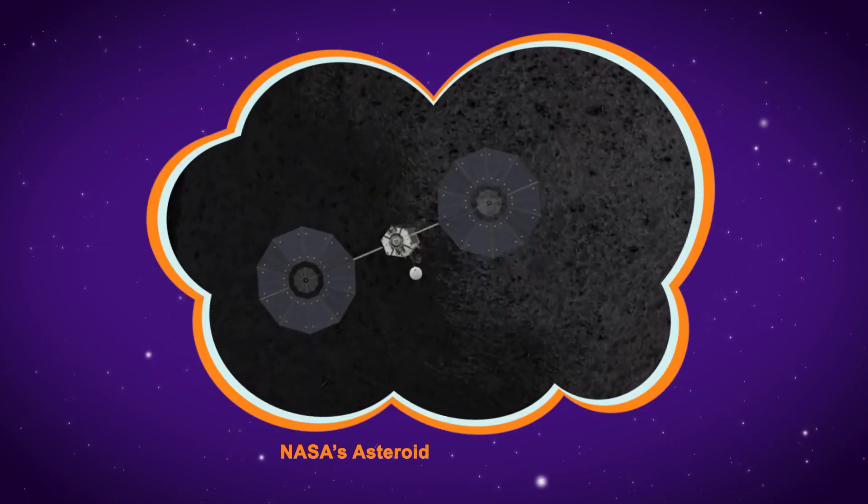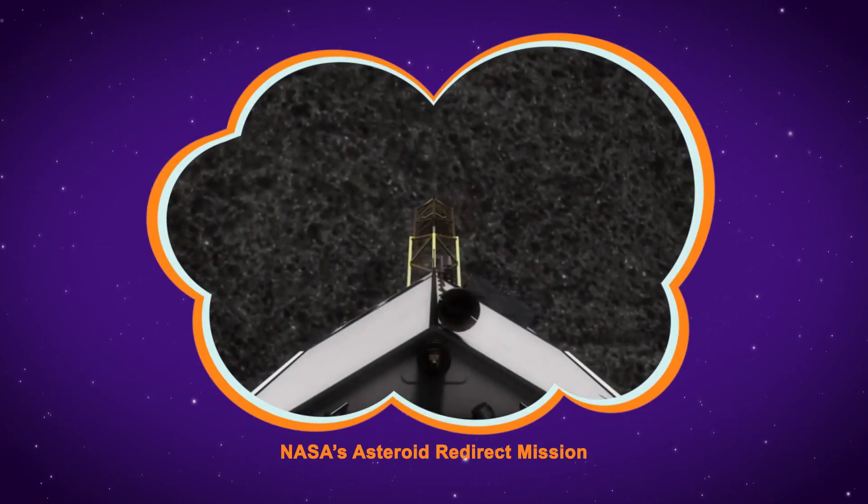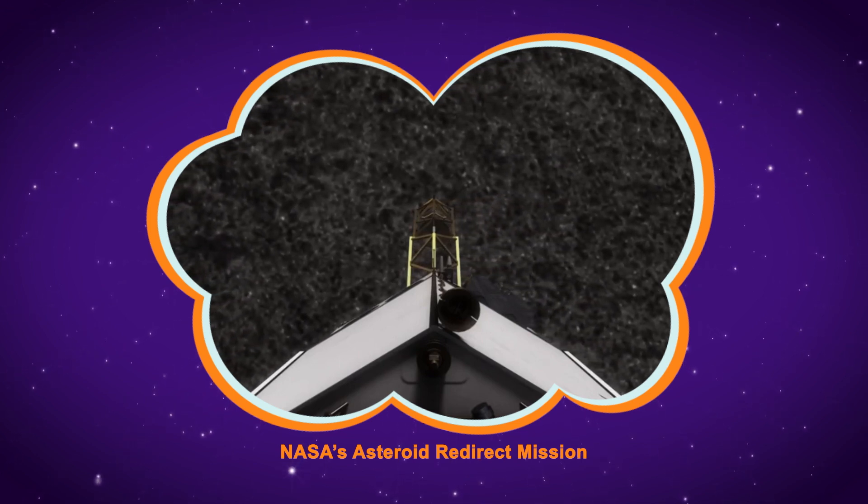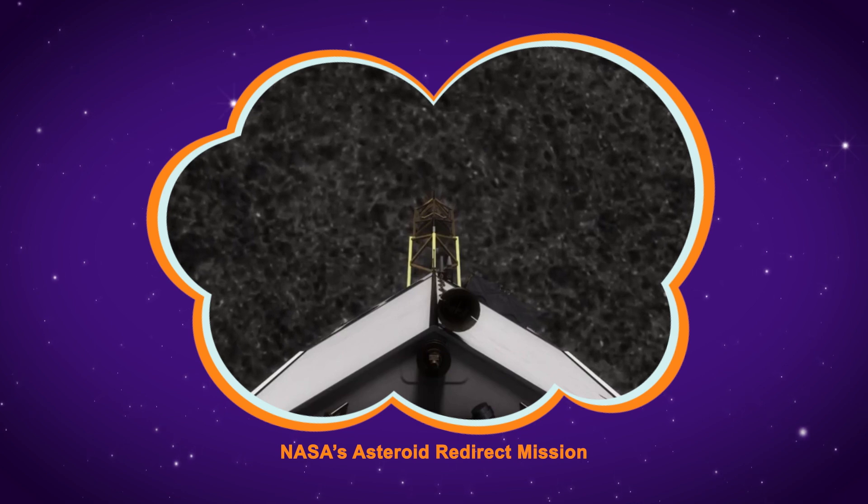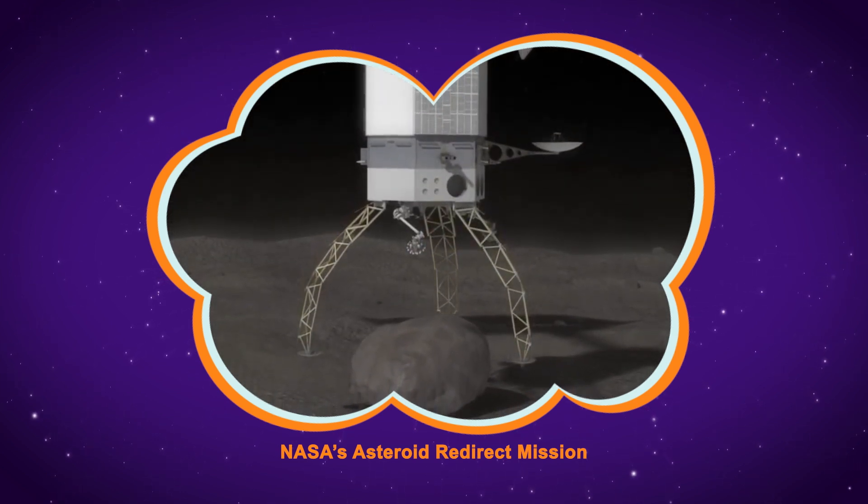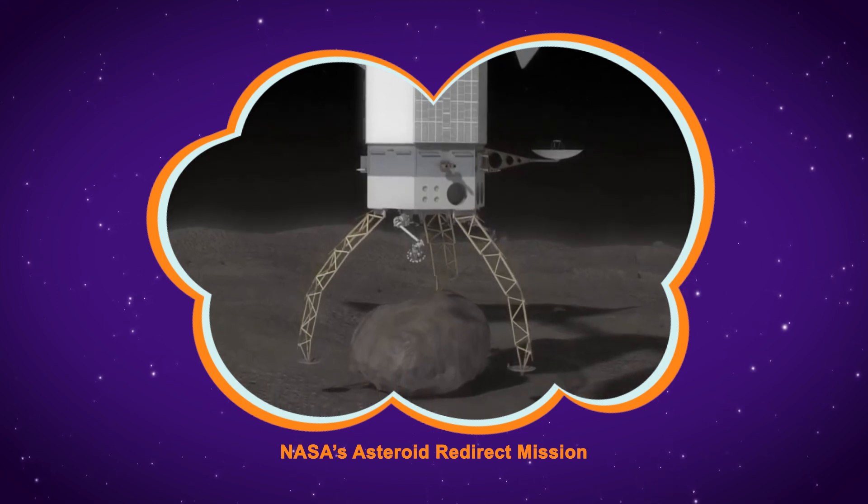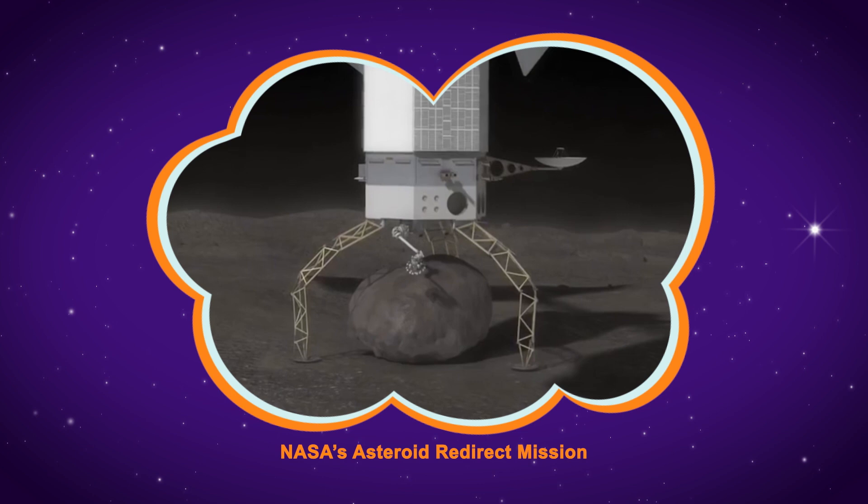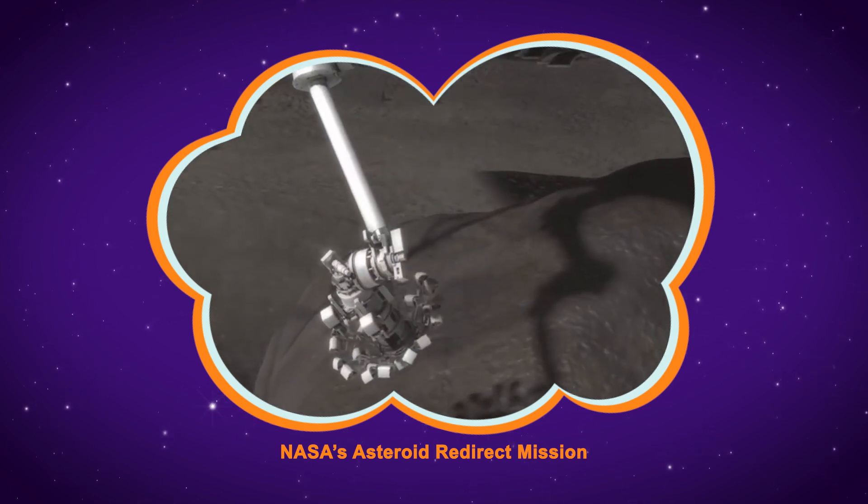To help keep us all safe from any possible future asteroids, NASA is developing an Asteroid Redirect Program. It's a first-of-its-kind mission for a spacecraft to land on a large asteroid, grab a huge boulder from its surface for further study, and then redirect the asteroid into a stable orbit around the Moon. This mission is set to launch by 2020.